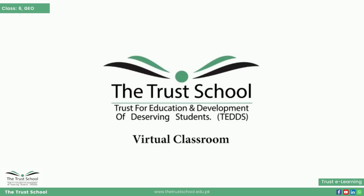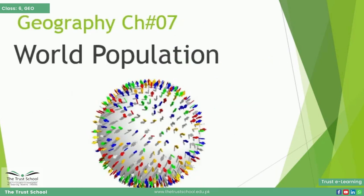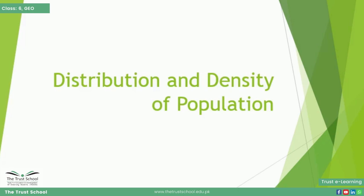The Trust School virtual classroom value of the week is cooperation. Dear students of class 6, we are studying unit number 7 of geography: World Population. After studying this topic, we will be able to understand the distribution and density of population — high, moderate, and low density population areas of the world.